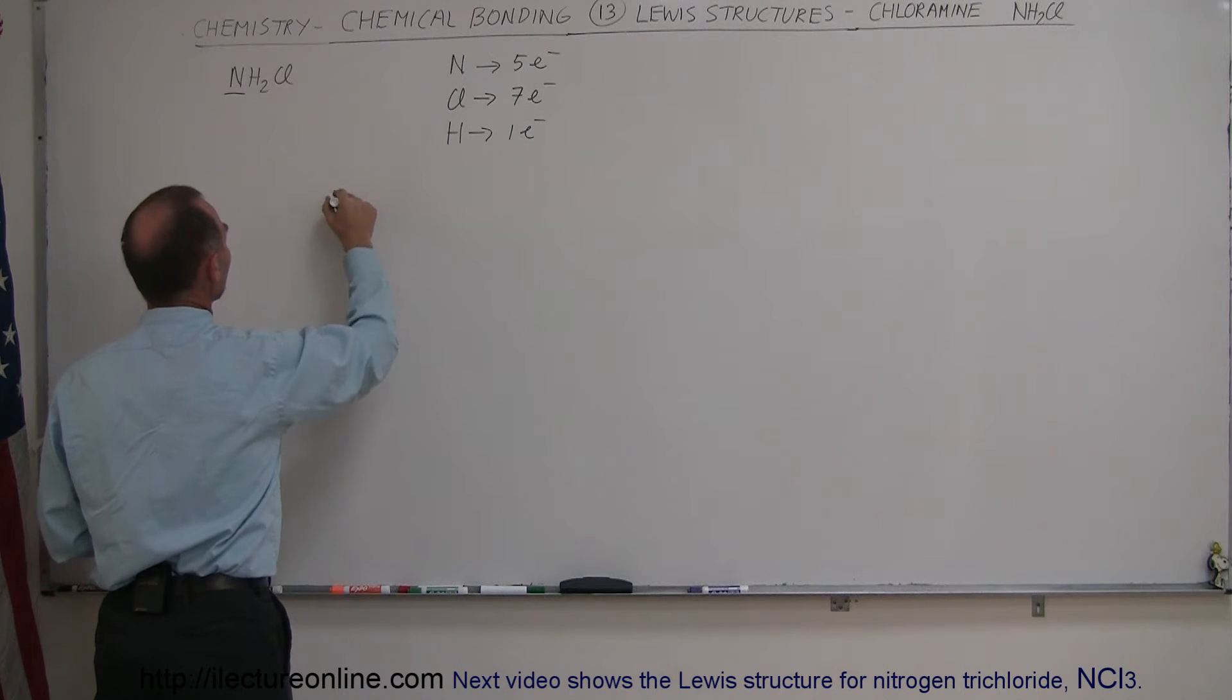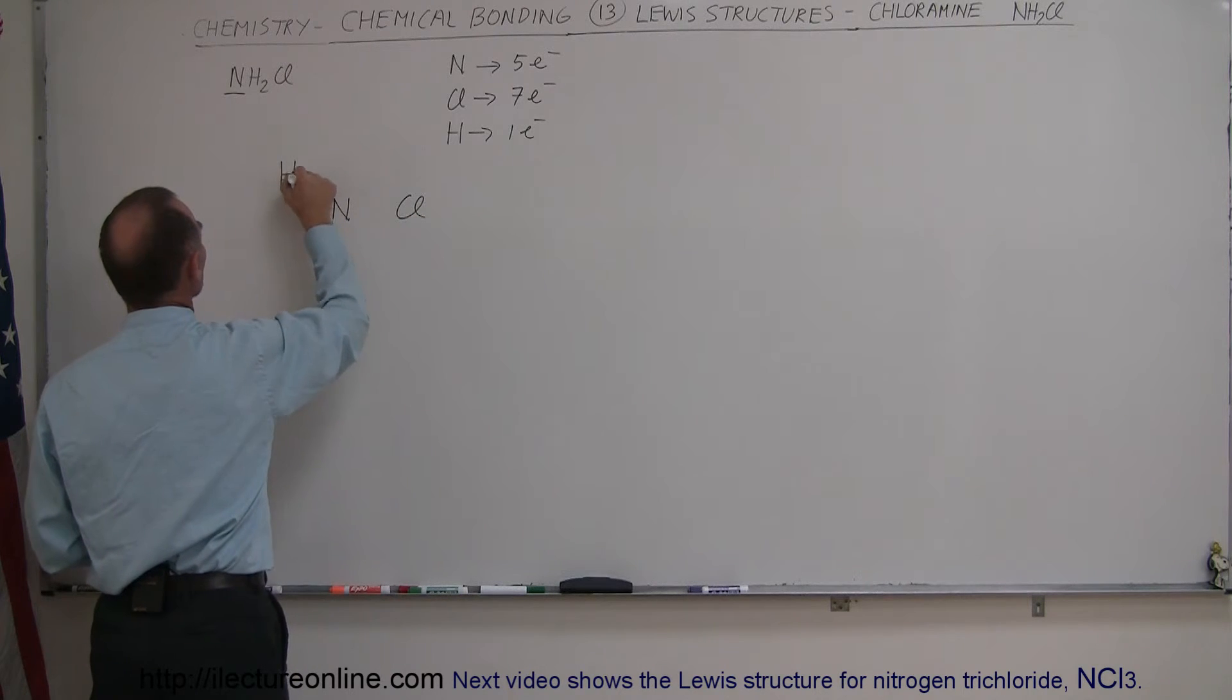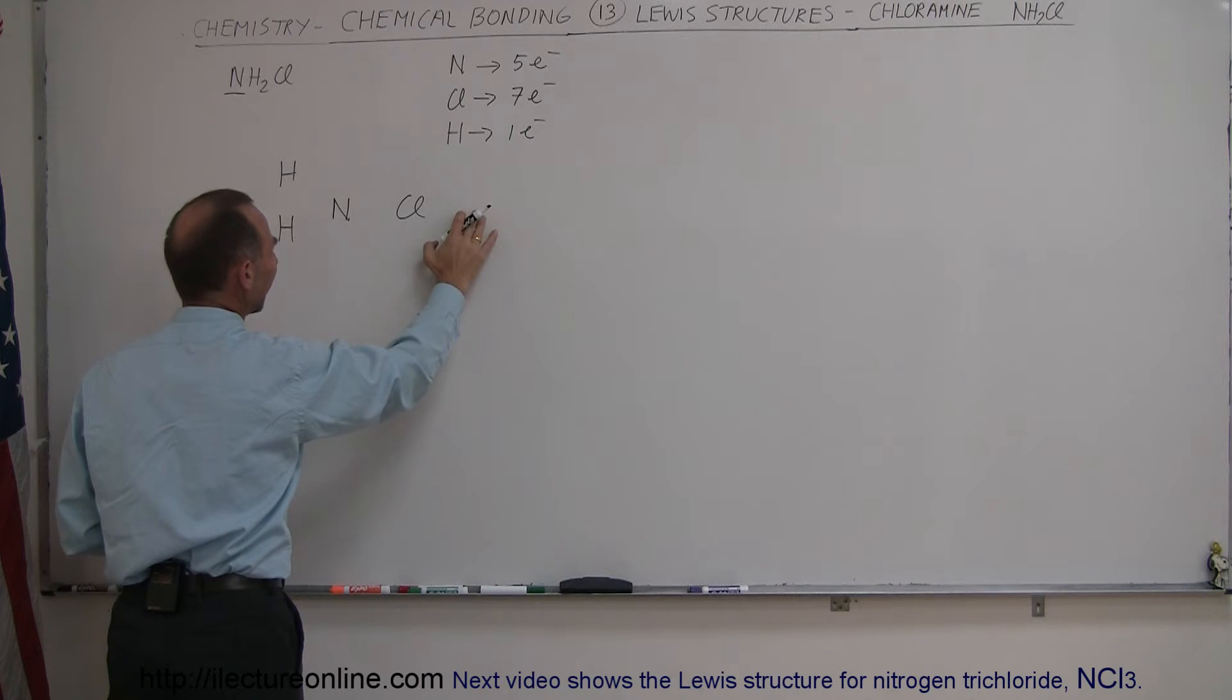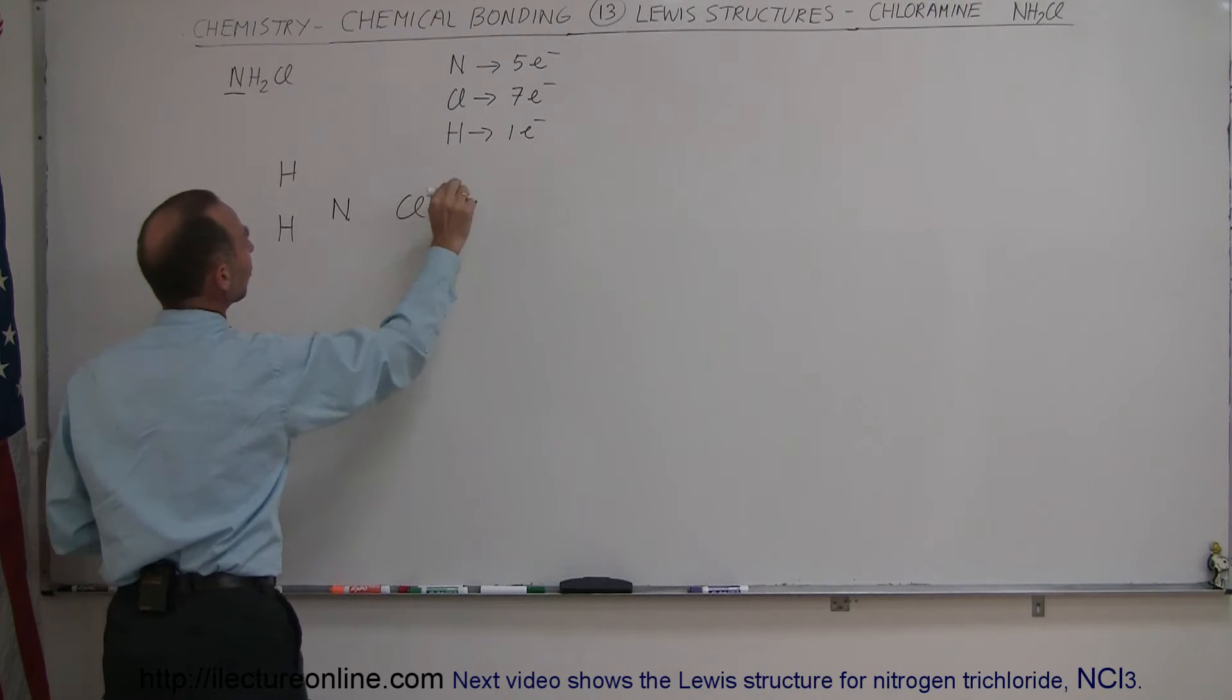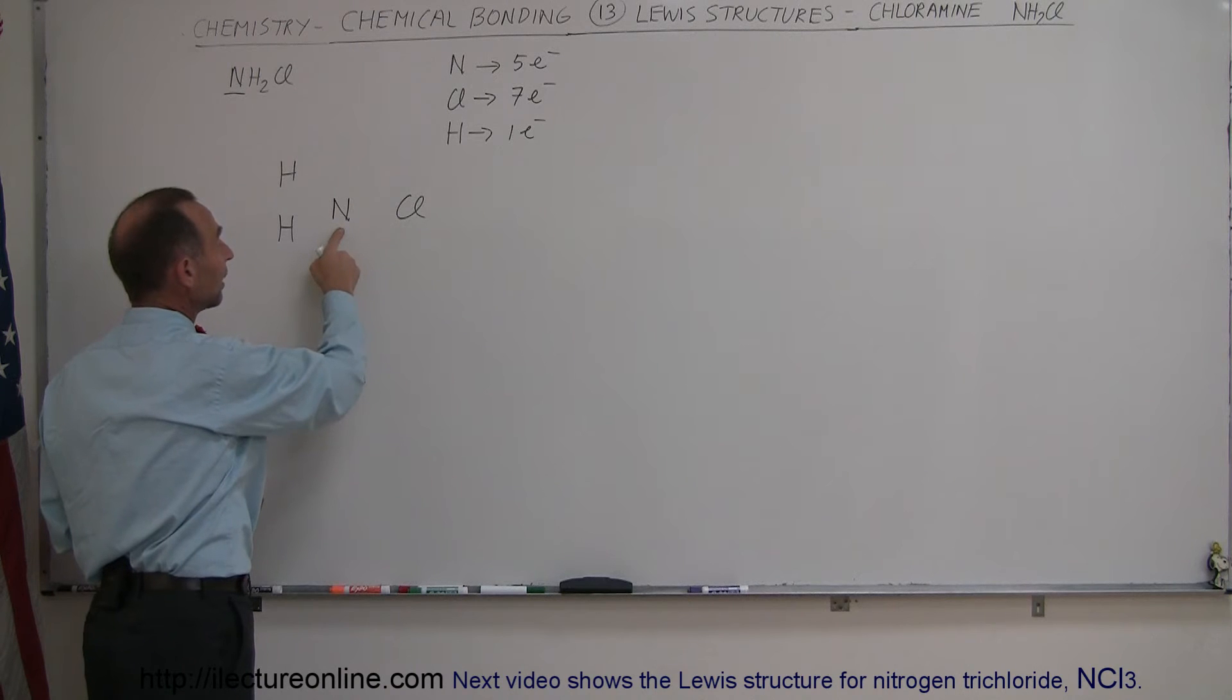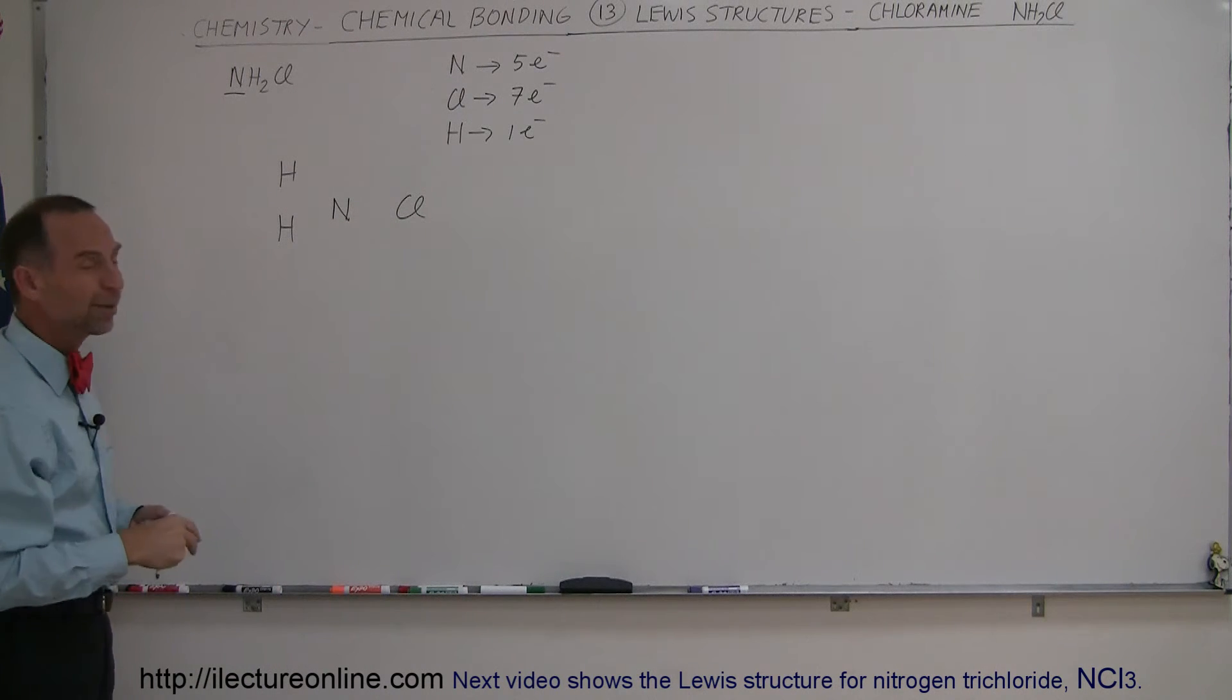So it's very likely that we'll have nitrogen in the middle, chlorine on one side, and hydrogen on the other side. Again, why didn't hydrogen bond with chlorine on this side? Because chlorine is only going to make one bond, very likely, which means one bond with nitrogen, and doesn't have an extra electron to share to bond with something like hydrogen. So this is the more likely scenario.